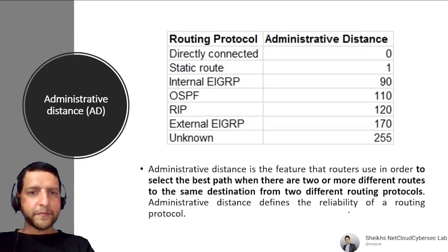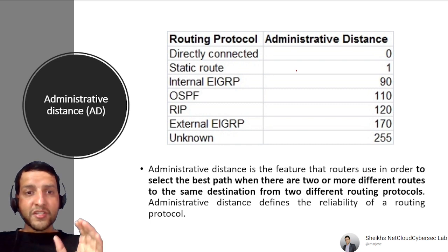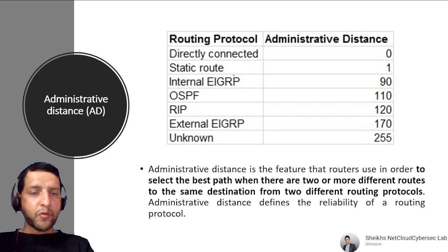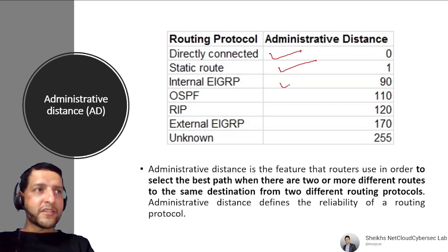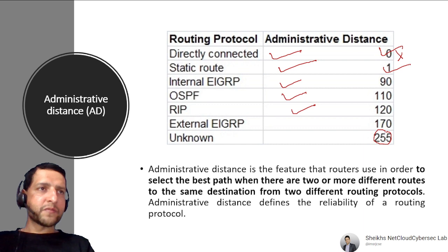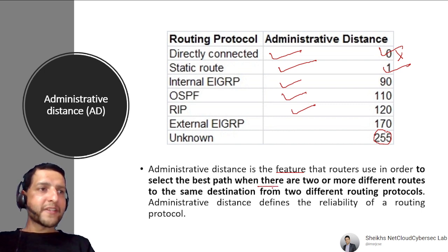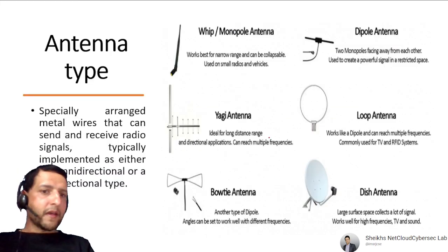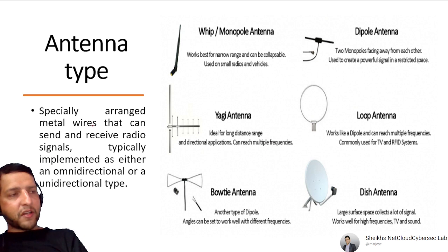Administrative Distance measures how trustworthy a particular route is. Lower number means higher priority. Directly connected routes have the highest priority (0), static routes are 1, internal EIGRP is 90, OSPF is 110, RIP is 120, and unknown is 255. If multiple routes are configured, the router chooses the one with the lowest administrative distance. It defines the reliability of a routing protocol.